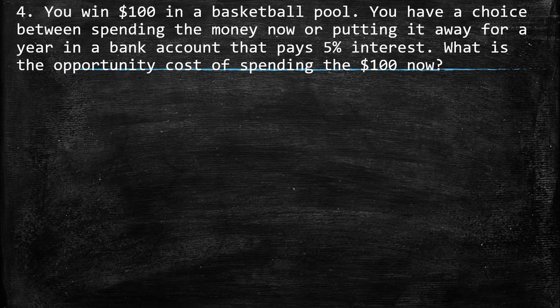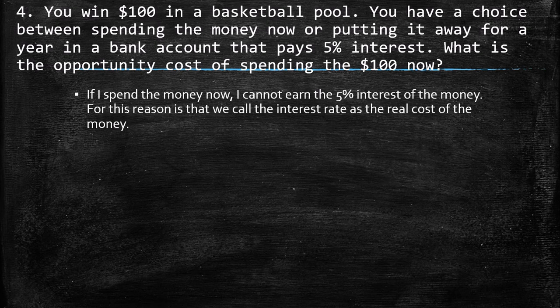The fourth point: you win $100 in a basketball pool. You have a choice between spending the money now or putting it away for a year in a bank account that pays 5% interest. What is the opportunity cost of spending $100 now? If I spend the money now, I cannot earn the 5% interest. For this reason, we call the interest rate the real cost of money. The opportunity cost of spending this money now is the interest I would receive in one year — the 5% interest.